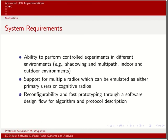Additional system requirements include performing controlled experiments in different environments — free space, shadowed environments, or ones with lots of multipath propagation. Also important is the ability to emulate a variety of different wireless standards in that environment. Reconfigurability and fast prototyping are really important, especially when testing things like cognitive radio and spectrally agile radios, requiring a platform that can operate on the fly, potentially in real time.